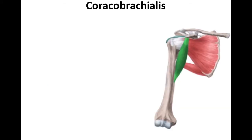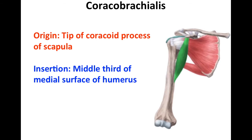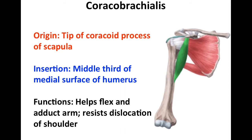Next, we're going to take a look at coracobrachialis. The point of origin for coracobrachialis is the tip of the coracoid process of the scapula, and it inserts on the middle third of the medial surface of the humerus. Its function is to help flex and adduct the arm, and this muscle plays an important role in resisting dislocation of the shoulder.